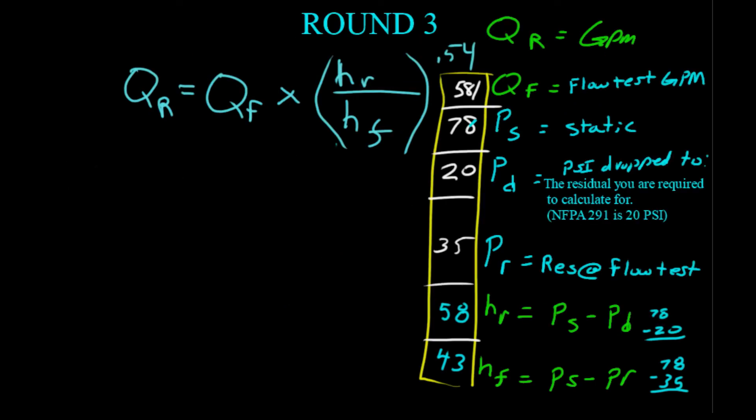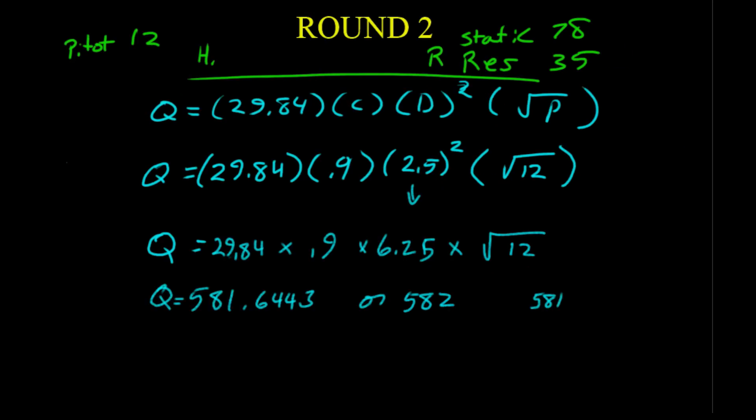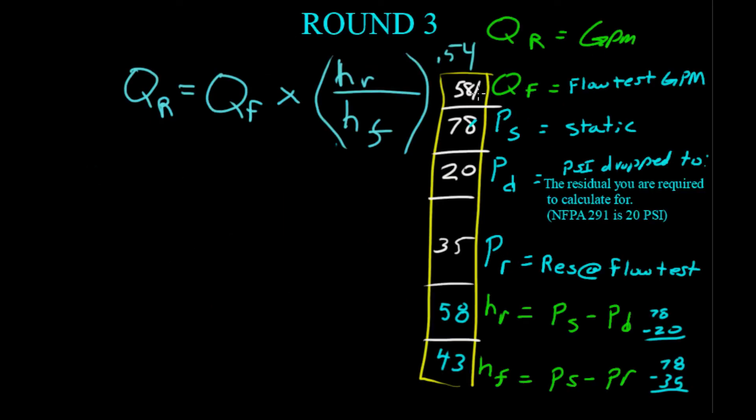Round three. We're going to take the results from this. We'll put 581 in here. And we're going to work out this equation. So, the HR. So, PS minus PD will be 78 minus 20. It will be 58. HF up here. PS minus PR. 78 minus 35 gives you 43. So, the H sub F is 43.